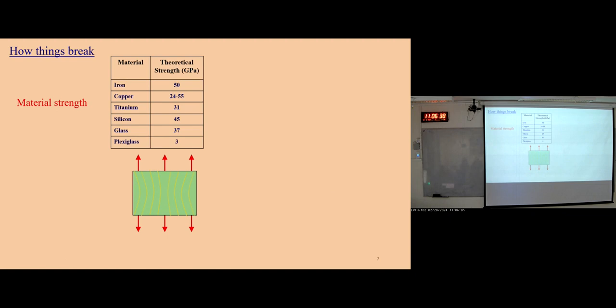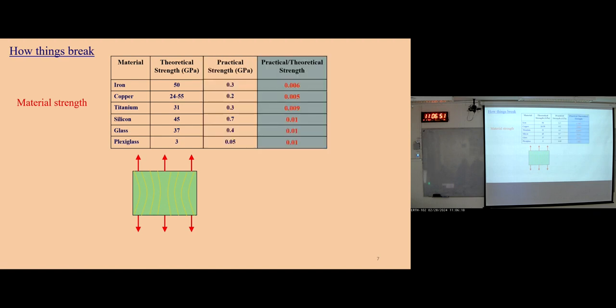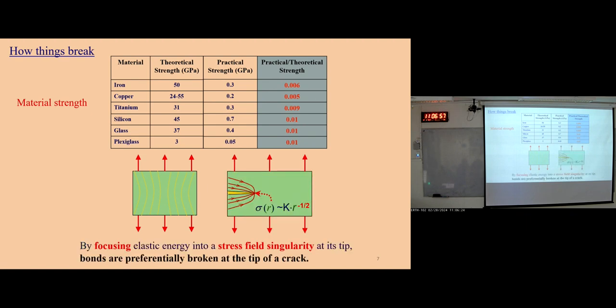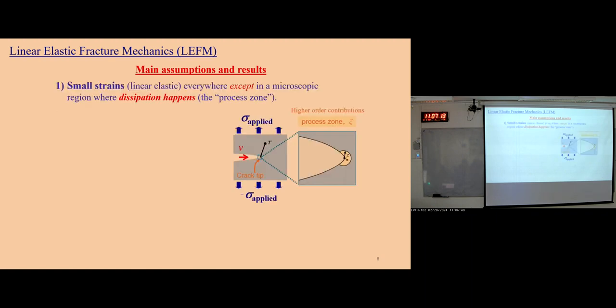For common materials like iron and silicon, the theoretical strength is mostly on the order of 10 gigapascals under stretching. But the practical strength is about 1% of the theoretical value. This is because the crack concentrates stress at the tip. Under this framework, the LEFM — linear elastic fracture mechanics — was built. Here I will show you three main assumptions and results of LEFM.